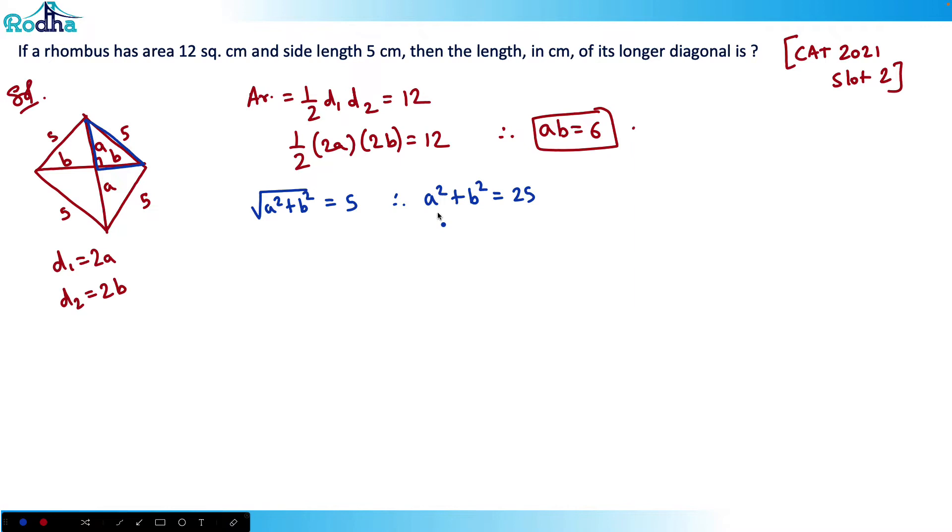I can simply apply this identity: (A+B)² equals A² plus B² plus 2AB. That is equal to 25 plus 2 into 6, that is 37.